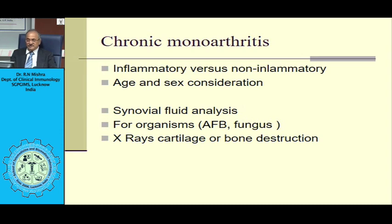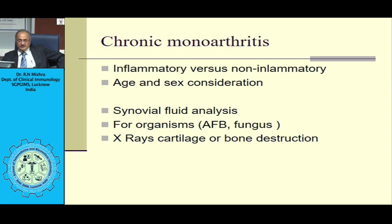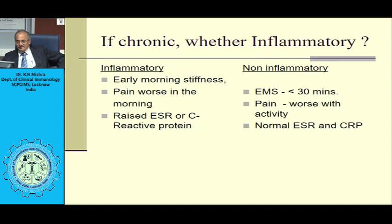The differential diagnoses of inflammatory monoarthritis presenting acutely or subacutely include septic arthritis, reactive arthritis, hemophilia, or crystal-induced synovitis such as gout or CPPD disease. In chronic monoarthritis, the most important diagnostic test is synovial fluid analysis for organisms such as staphylococcus, mycobacteria, or fungus. X-ray is often asked for but is seldom helpful in acute monoarthritis unless there is cartilage or bone destruction.